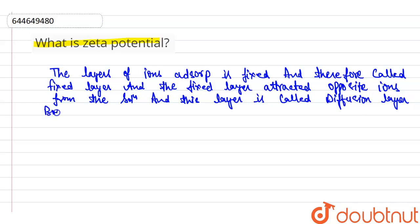And both these layers are called Helmholtz's double layer.